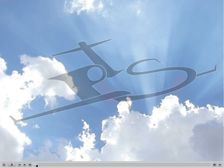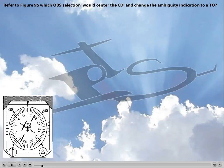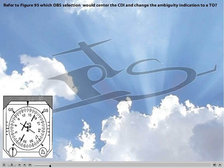This is another question on the instrument written that many applicants struggle with and usually end up guessing at the answer. The question says, refer to figure 95: which OBS selection would center the CDI and change the ambiguity indication to a 'TO'? The question itself is confusing, so the first thing we need to do is understand what they are actually asking — to make it simple, they're asking you what is your heading to the station.